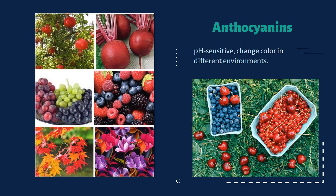Next is anthocyanins. When processing red and purple foods like blueberries and red cabbage, in acidic conditions they will stay red, but in alkaline conditions they will turn blue or green.